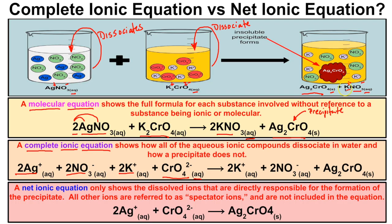On the product side, potassium nitrate is aqueous so it dissociates into two moles of potassium ions and two moles of nitrate ions in water. Silver chromate is our precipitate — it is solid and insoluble in water, so it does not dissociate; it stays together. This gives us our complete ionic equation, showing how all aqueous ionic compounds dissociate and how the precipitate does not.